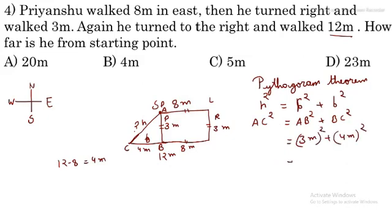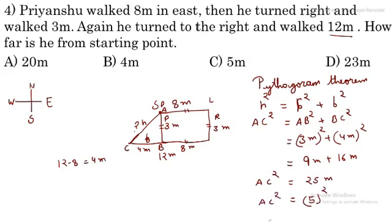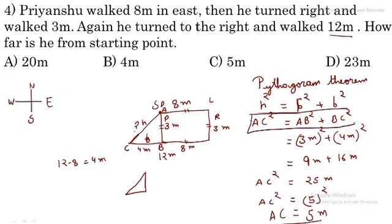So AC² = 9 + 16 = 25. Now AC² = 25 = 5². Therefore AC = 5 meters. So the distance from the starting point is 5 meters, and option C is the correct answer for this question.